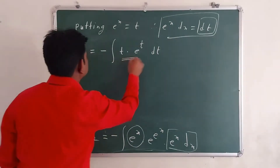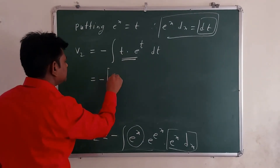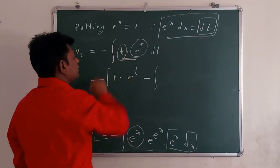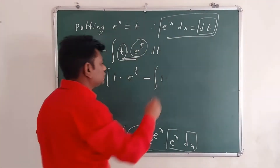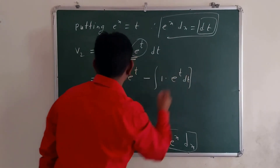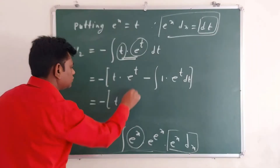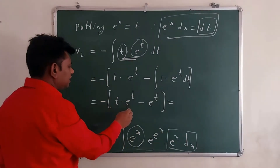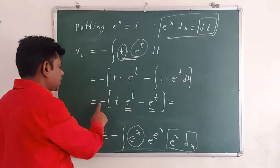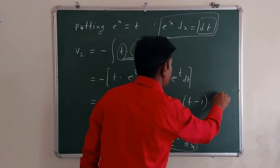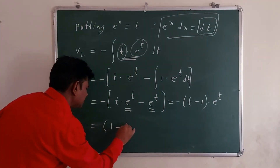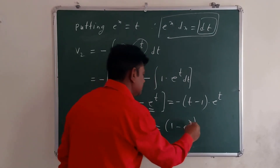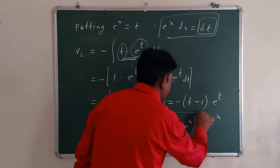Applying integration by parts to -∫t·e^t dt: V2 = -(t·e^t - ∫e^t dt) = -(t·e^t - e^t) = -(t - 1)·e^t = (1 - t)·e^t. Substituting back t = e^x, V2 = (1 - e^x)·e^(e^x).